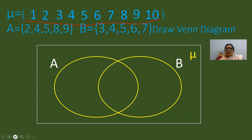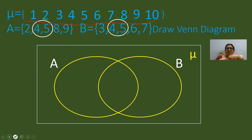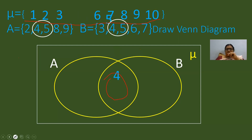So how to show these elements in this universal set? First of all look at set A and set B. What are the common elements in both sets? 4 and 5 are the common elements in both sets. So first of all, this intersection part — in this part these two elements will come and sit. We will pick these elements from the universal set mu and put them in the intersection part.